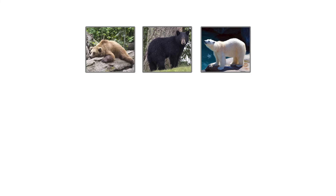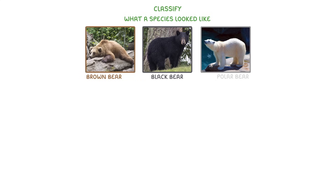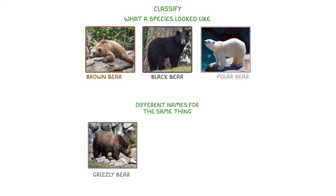With millions of different species on Earth, we need some way to classify them. Our ancestors often did it based on what a species looked like. For example, a black bear is different to a brown bear, or it is different to a polar bear. But it's hard to come up with names like this for everything, and different people around the world had different names for the same thing, like the grizzly bear, which is just a type of brown bear.